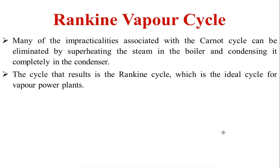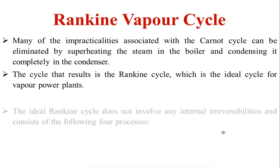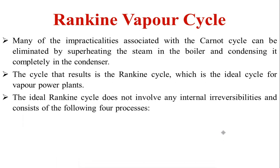This is the ideal cycle for all vapor power plants, whether it is a nuclear power plant, thermal coal power plant, byproduct gas power plant, diesel power plant, or whatever it may be. This is the ideal cycle for all vapor power plants. The ideal Rankine Cycle does not involve any internal irreversibilities.